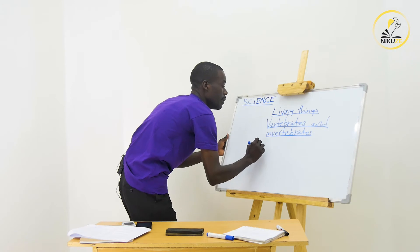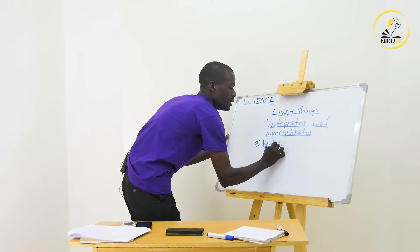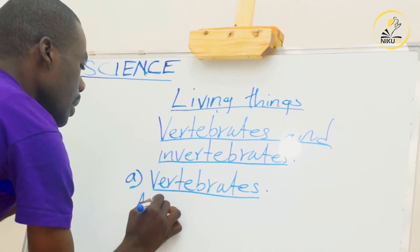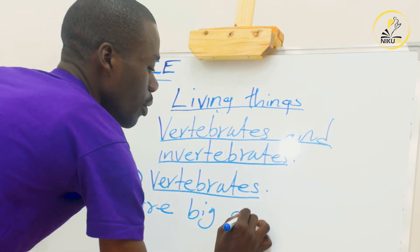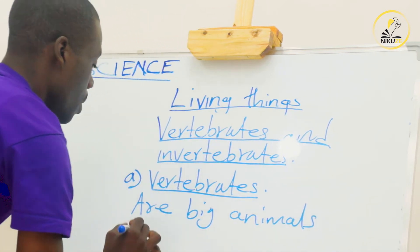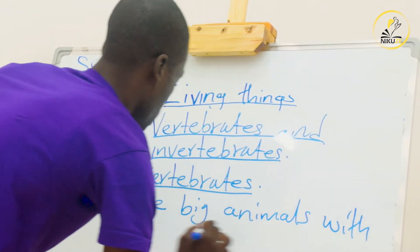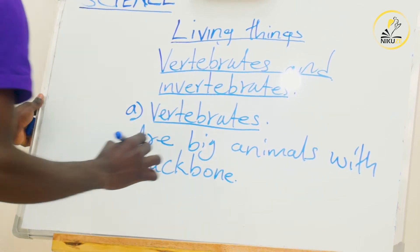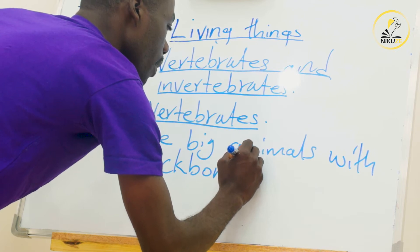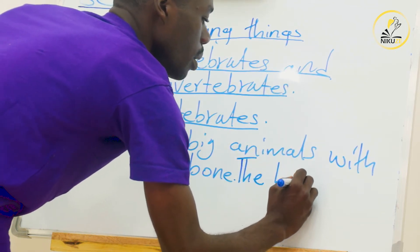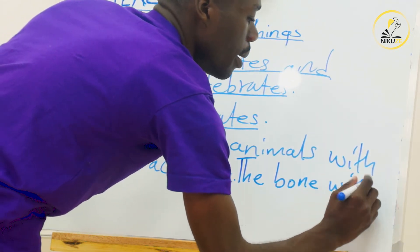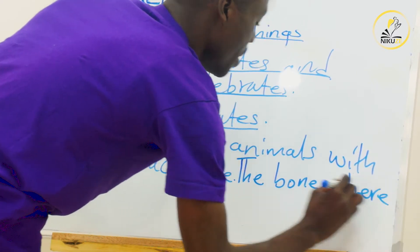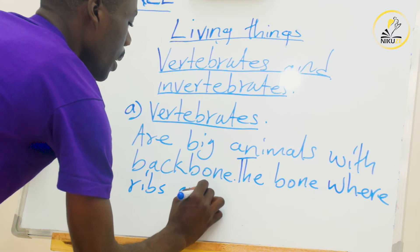So we have said vertebrates are big animals with a backbone. This backbone is the bone where the ribs are joined.